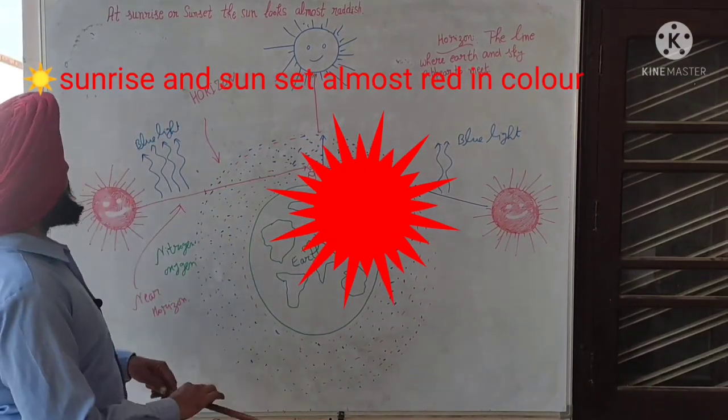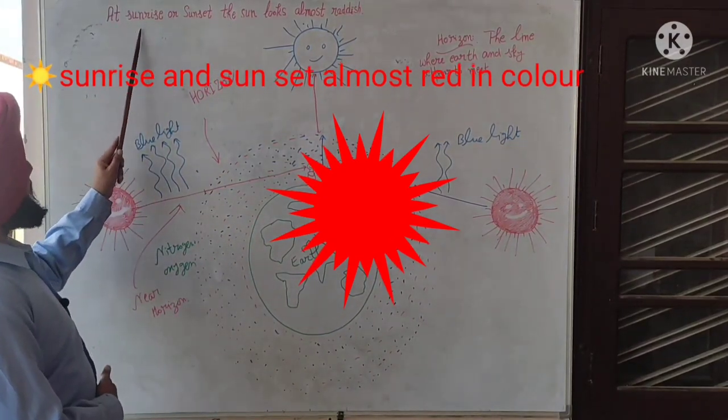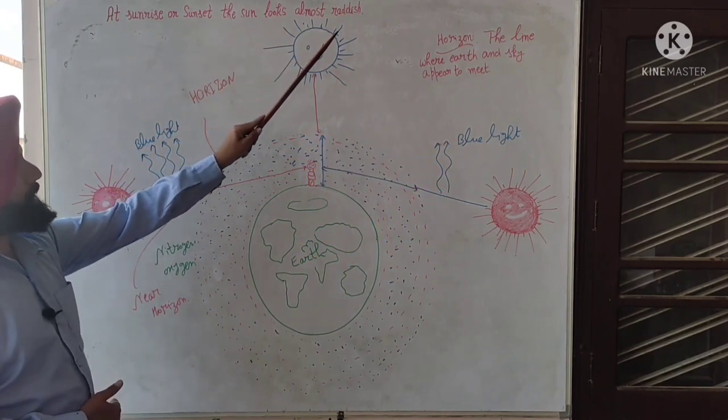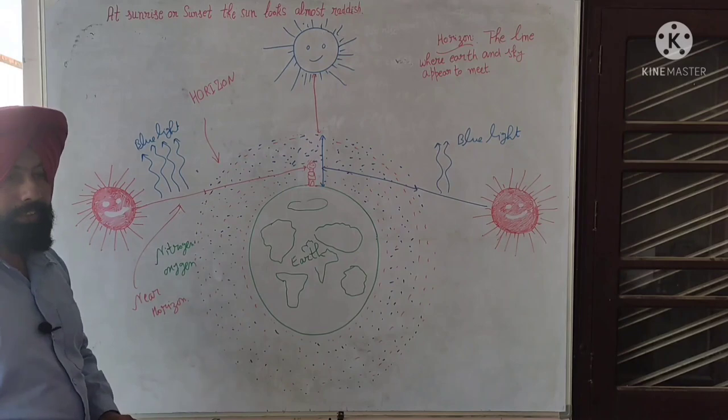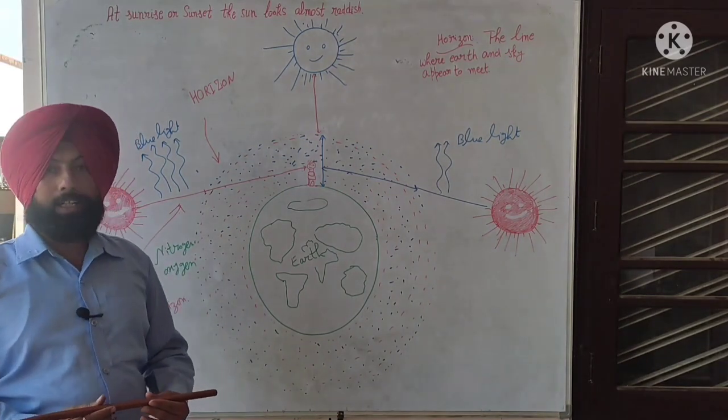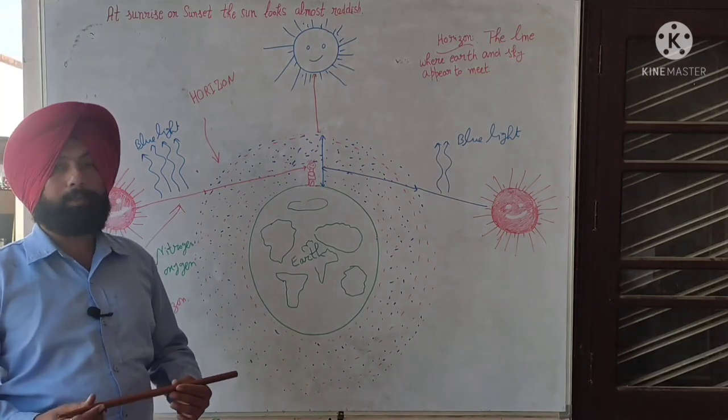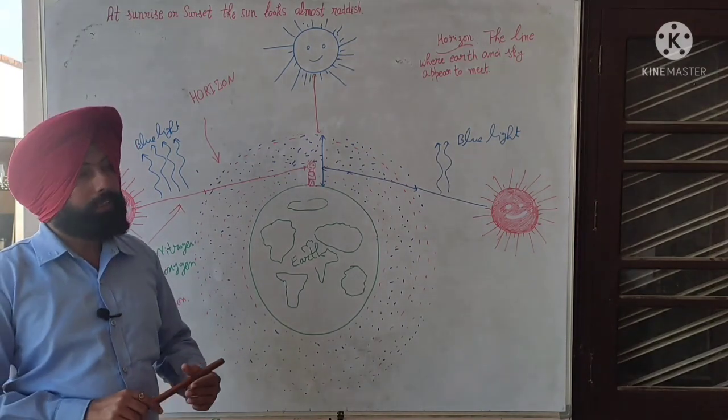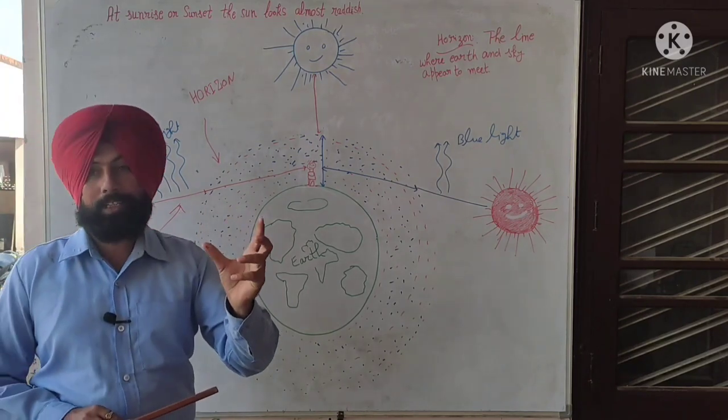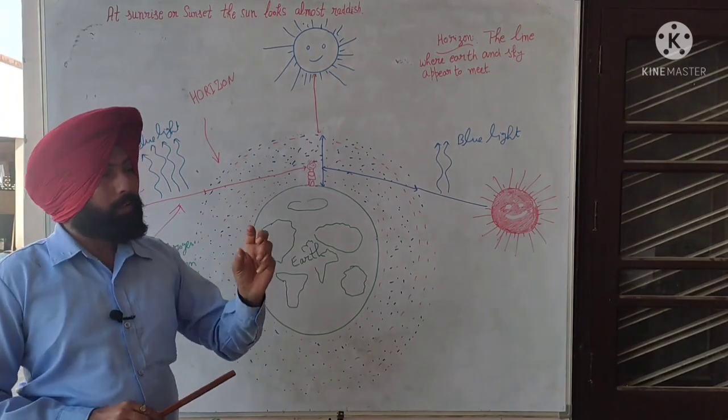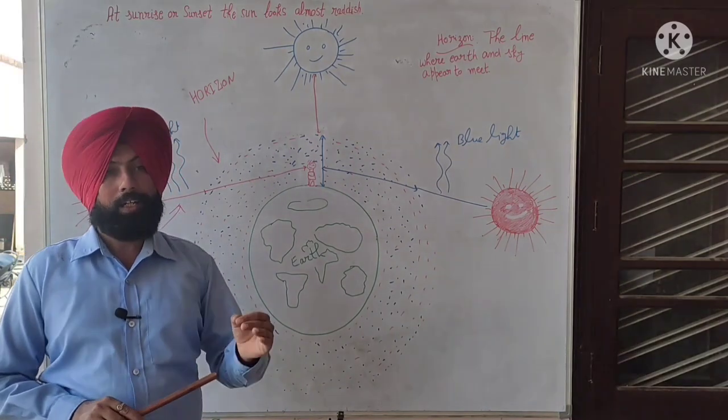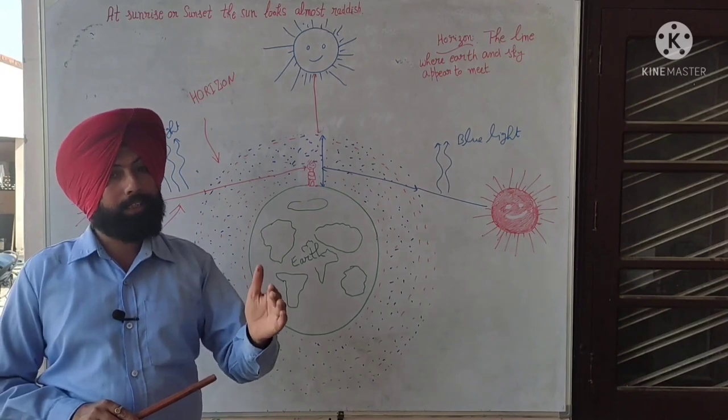Today is our topic. At sunrise or sunset, the sun looks almost reddish. When we see the sun in the morning, the sun looks almost reddish. What is the reason behind it?